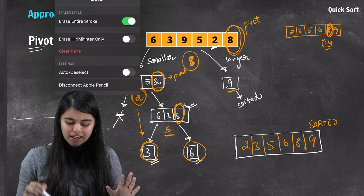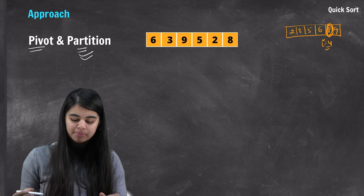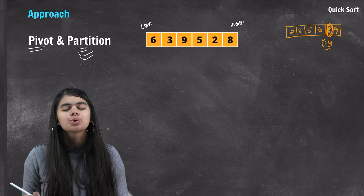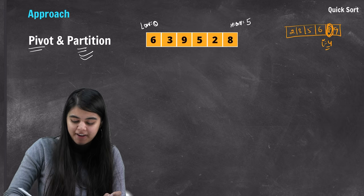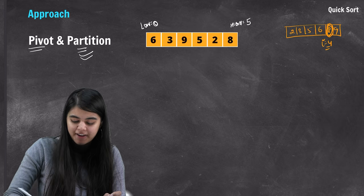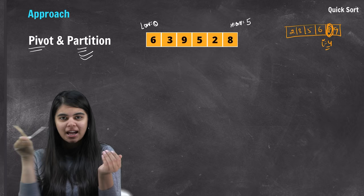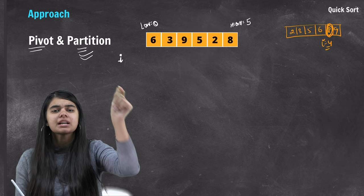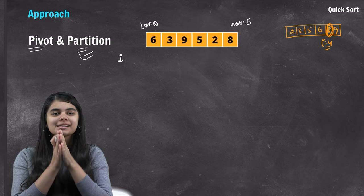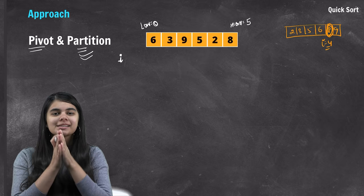How do we implement this in code? We have two variables: low and high. Low will store the starting index, and high will store the ending index — which is n-1. We will take another variable called i. Variable i will track where to place the elements that are smaller than the pivot.